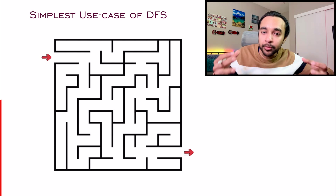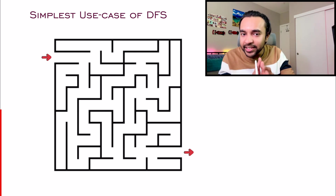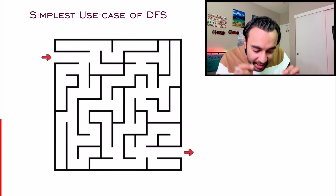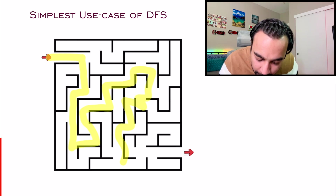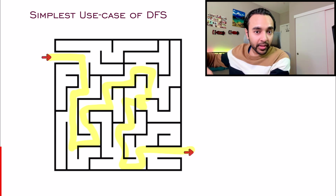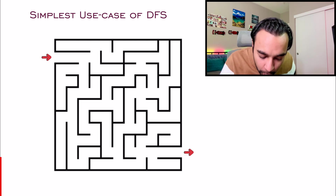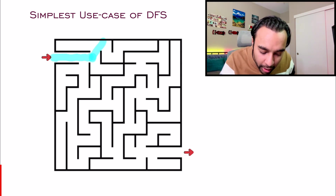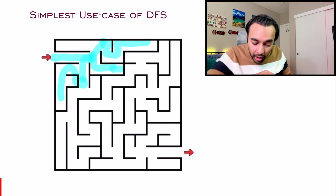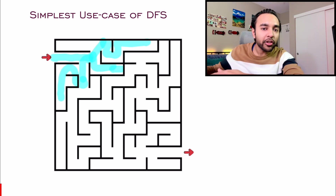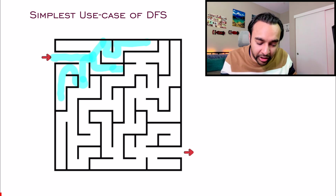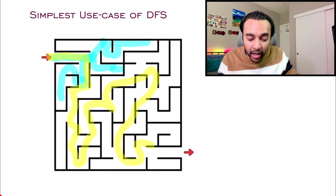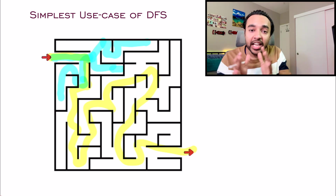You should now be getting a good idea of where a depth first search is actually helpful. For example, consider maze-solving games. A depth first search ensures you start from a point and try to go as deep as possible following a certain path, and then determine whether a solution exists. If you tried to explore all neighboring paths at once — going one step in every direction — that would take much more time. That is actually known as a breadth first search. But with a depth first search, you start down one path and go as deep as you can.